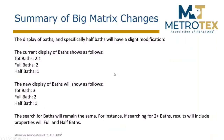Another big Matrix change is the display of baths. Currently, when a home has two-and-a-half baths, the display shows 2.1 — two full baths and one half bath. That's the current display. In the new system, total baths will show as three, because the home actually does have three baths, and then it will break down into two full baths and one half bath, just like in the old system.